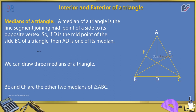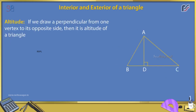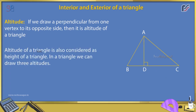BE and CF are the other two medians of triangle ABC. Altitude: if we draw a perpendicular from one vertex to its opposite side, then it is the altitude of a triangle. The altitude is also considered as the height of a triangle. In a triangle, we can draw three altitudes. Here, AD is the perpendicular from vertex A to BC.